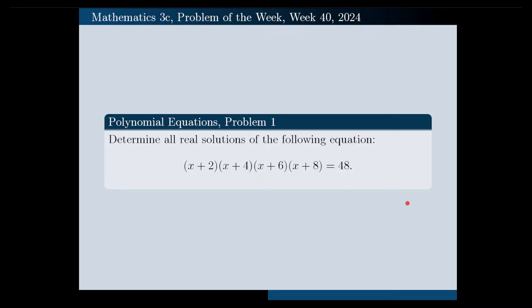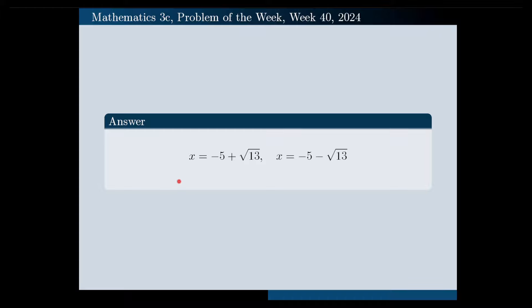It would be a good idea if you pause the video at this point and try to solve the problem yourself first. If you do the calculations correctly, these are the answers you will get: x = -5 + √13, and x = -5 - √13.